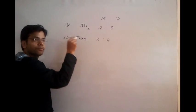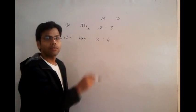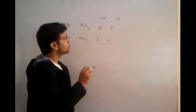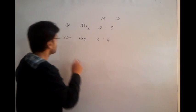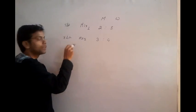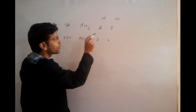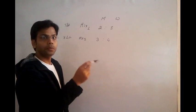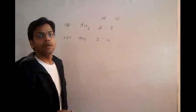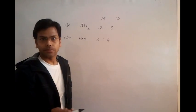5 litres of solution 1, which has milk and water in the ratio of 2 to 3, mixed with 7 litres of another solution in which the ratio of milk and water is 3 to 4. What would be the milk and water ratio in the resulting mixture?